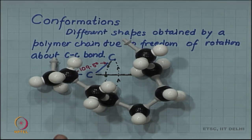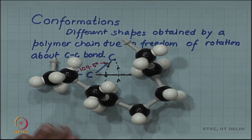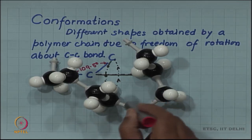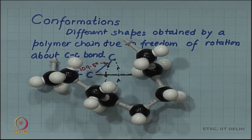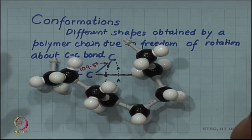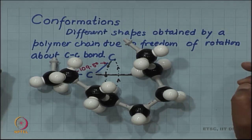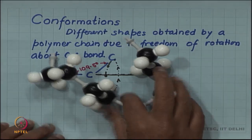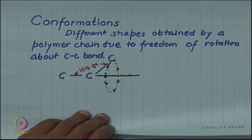This is a different conformation. What I have is the same molecule, but in a different conformation. Each bond angle, if one carefully looks at each bond angle, is still 109.5, but the shape of the molecule in three dimensions is very different from the straight chain I started with.